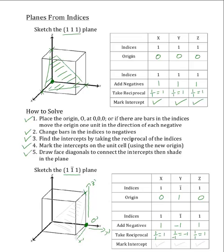Now the next step is to mark these intercepts on the unit cell with respect to the new origin. So for our x-intercept, we will start at our new origin and travel 1 unit in the positive x'-direction, which will place us right here. Now for our y-intercept, we will go back to our origin and travel 1 unit in the negative y'-direction, which will place us right here. And for our z-intercept, we will go back to our new origin and travel 1 unit in the z'-direction, which will place us right here.